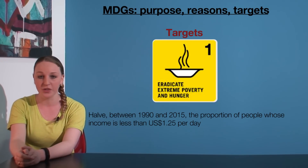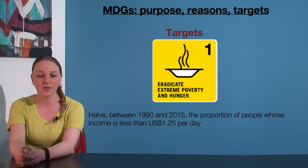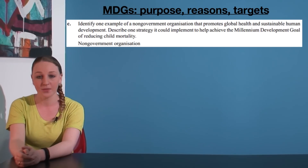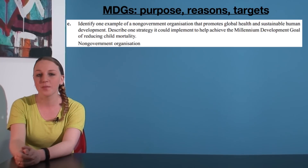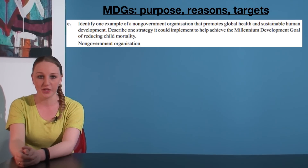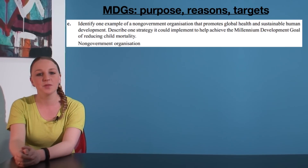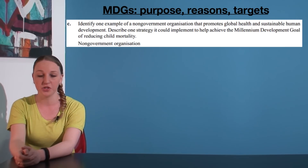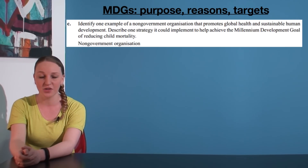A list of each goal's targets is also available below this video, but they are very handy in answering particular types of questions. This question is from the 2010 Vika exam. Here, we need to explain how a non-governmental organisation could help to achieve MDG 4, Reduce Child Mortality. To demonstrate a depth of understanding, this is a great question to use the targets of that goal.